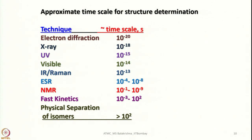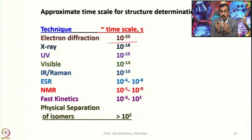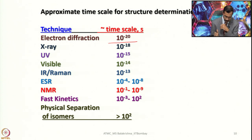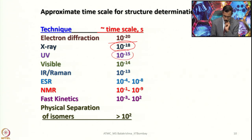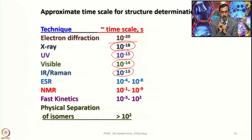Let me give approximate time scales for structure determination. Electron diffraction can capture processes up to 10⁻²⁰ seconds, X-ray up to 10⁻¹⁸ seconds, UV-visible up to 10⁻¹⁵ seconds, visible up to 10⁻¹⁴ seconds, IR and Raman up to 10⁻¹³ seconds, ESR from 10⁻⁴ to 10⁻⁸ seconds, and NMR from 10⁻¹ to 10⁻⁹ seconds.